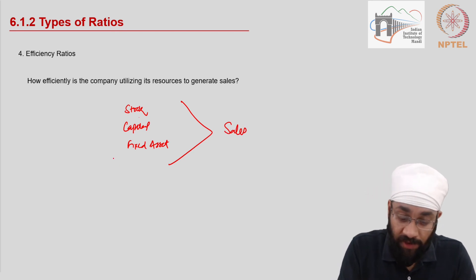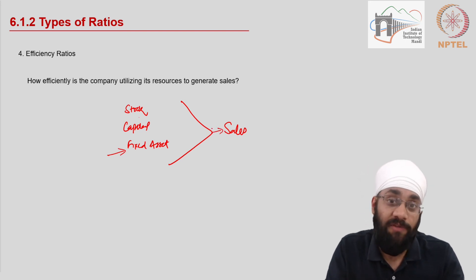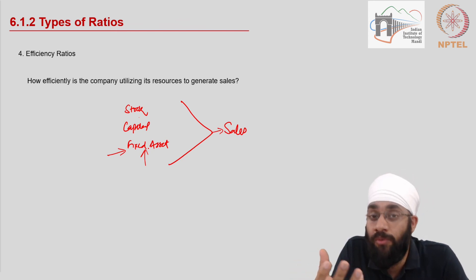So for every fixed asset, how much sale is being generated? That kind of analysis. Are we investing in productive fixed assets or are we investing in not so productive fixed assets? In the banking sector, there is a term called non-performing assets. These are the assets which are not paying you.